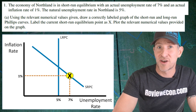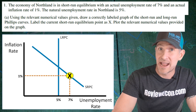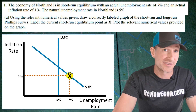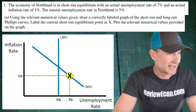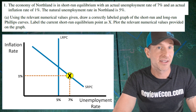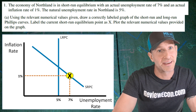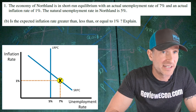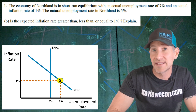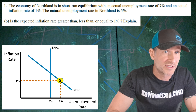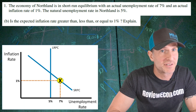That's because on the lower end of that short-run Phillips curve, we have a higher rate of unemployment than the natural rate of 5%. If you have that point labeled with the proper values, you get your second point. For part B, we are asked if the expected inflation rate is greater than, less than, or equal to 1%, and we have to explain.